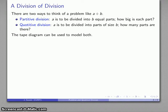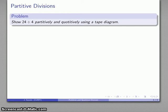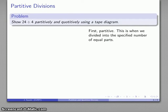And the tape diagram can be used to model both divisions. For example, let's take 24 divided by 4. We'll show them partitively and quotitively using a tape diagram. We'll start with our partitive division. It's the more natural way to read the division, if not to actually perform it.